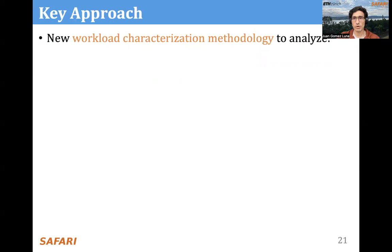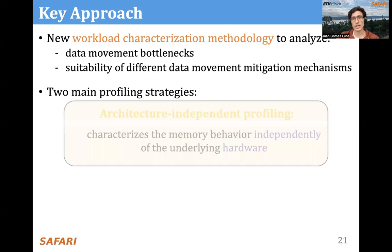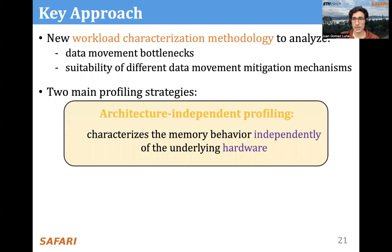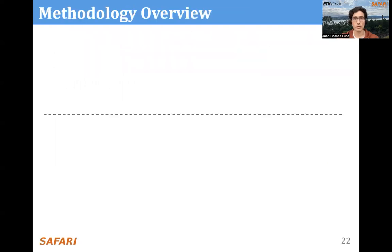The goal of our work is to develop a methodology that can methodically identify sources of data movement bottlenecks and comprehensively compare compute and memory-centric data movement mitigation techniques. The key approach of this characterization methodology is to analyze data movement bottlenecks, study the suitability of different mitigation mechanisms, and use two different profiling strategies: an architecture-independent profiling that characterizes memory behavior independently of the underlying hardware, and an architecture-dependent profiling that evaluates the impact of system configuration on memory behavior.